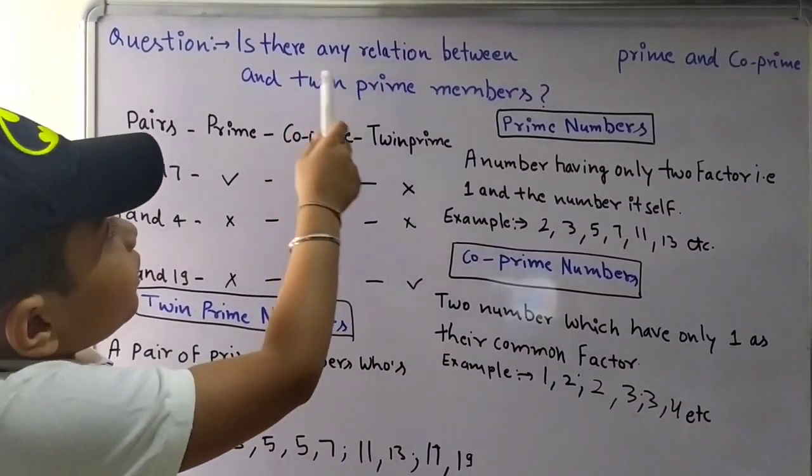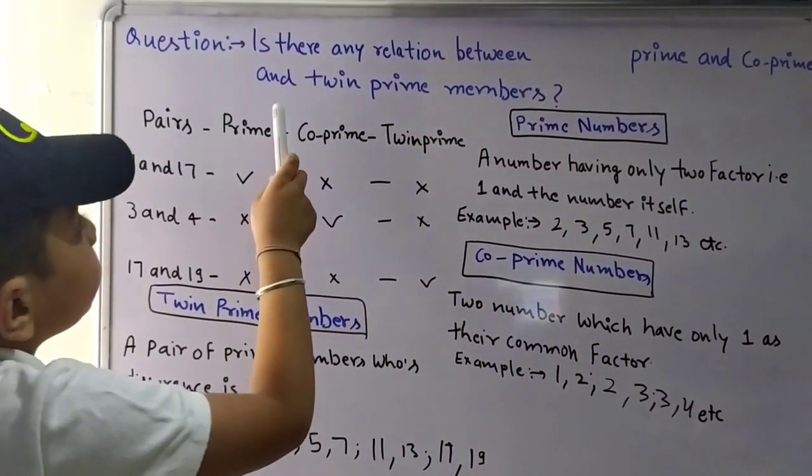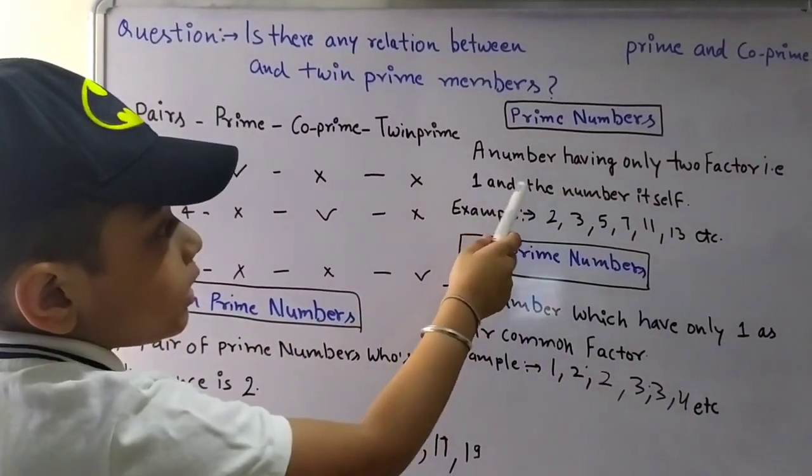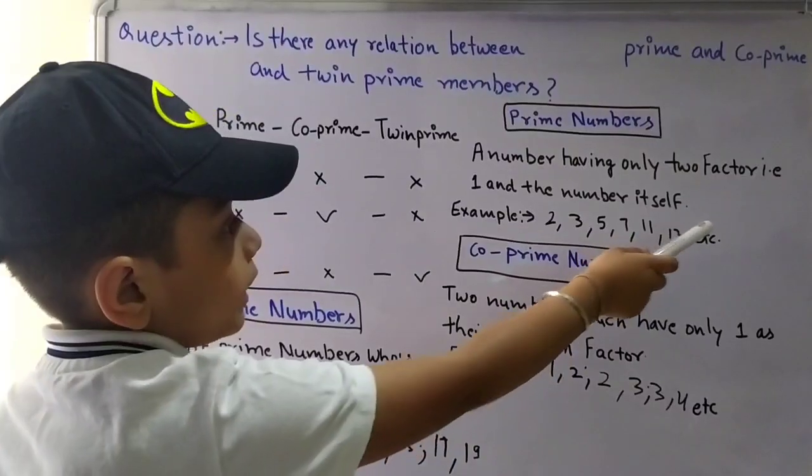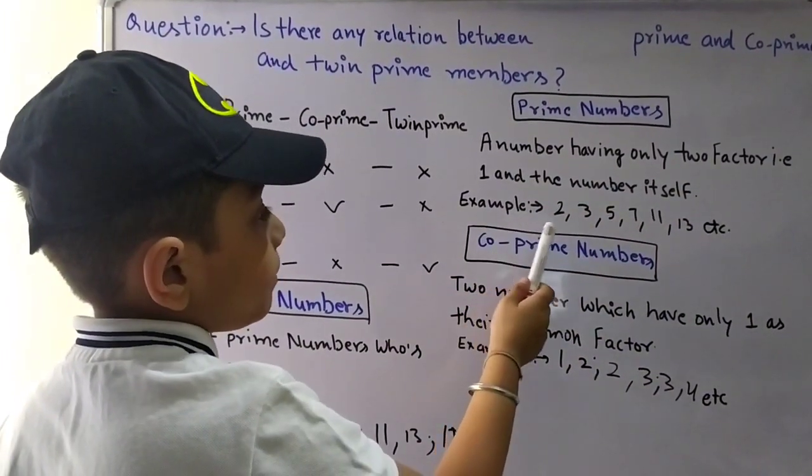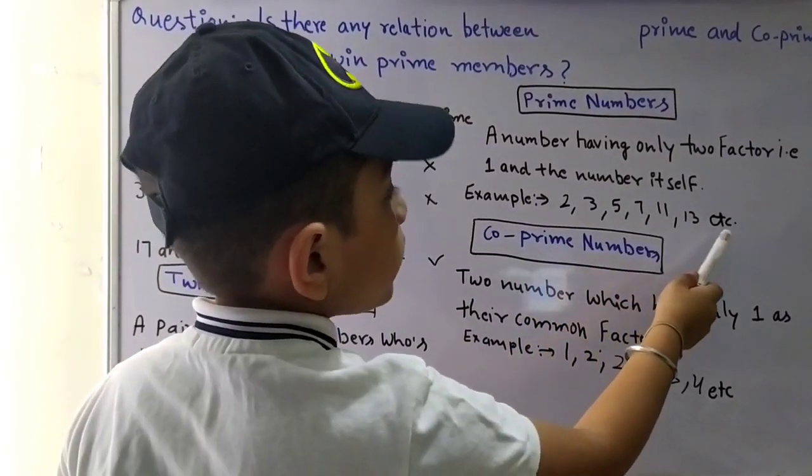Question: Is there any relation between prime and co-prime and twin prime numbers? Prime numbers: a number having only two factors, i.e. 1 and the number itself. Example: 2, 3, 5, 7, 11, 13, etc.